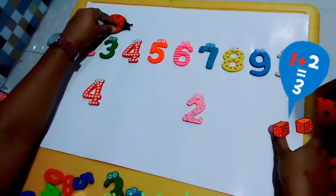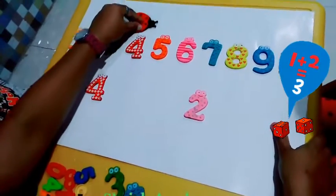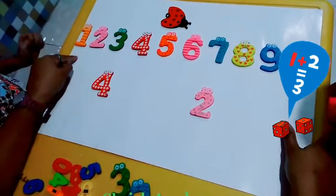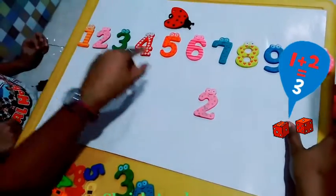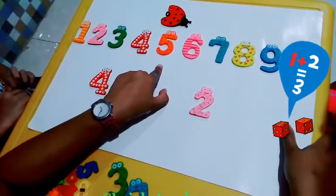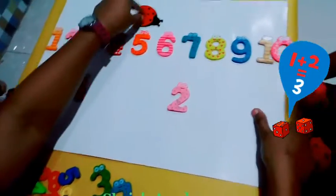1, 2, 3, 4. So 1 plus 4 is 5. So the bug is standing on 5.